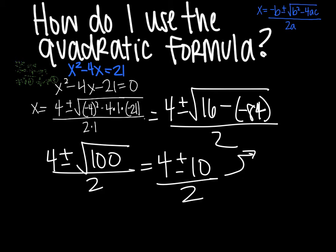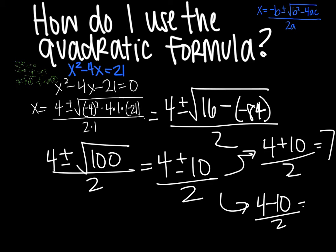Break it apart now. Now I have 4 plus 10, which is 14. 14 divided by 2 gives me an answer of 7. And then I have 4 minus 10 divided by 2. And that's negative 6 divided by 2, which will give me negative 3. Don't always work this nicely. Trust me.